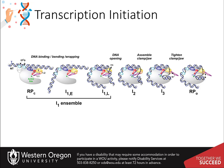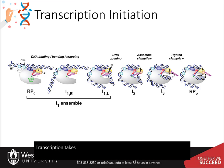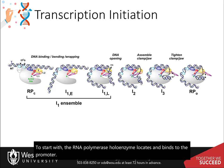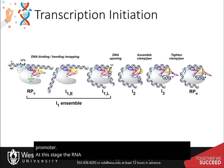Transcription takes place in several stages. To start with, the RNA polymerase holoenzyme locates and binds to the promoter. At this stage, the RNA polymerase holoenzyme is in the closed conformation.